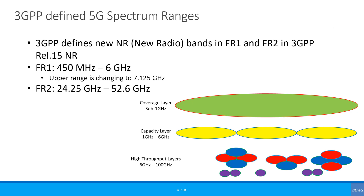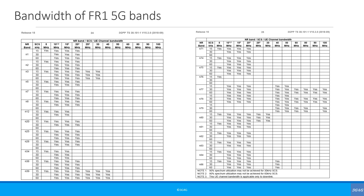3GPP has defined New Radio bands FR1 and FR2 ranges as part of 3GPP Release 15. Frequency Range 1 (FR1) goes from 450 MHz to 6 GHz — the upper range of 6 GHz is changing to 7.125 GHz. Frequency Range 2 (FR2) has been defined as starting from 24.25 GHz and going all the way up to 52.6 GHz. FR2 is generally also referred to as the millimeter wave band, even though technically millimeter wave starts from 30 GHz.